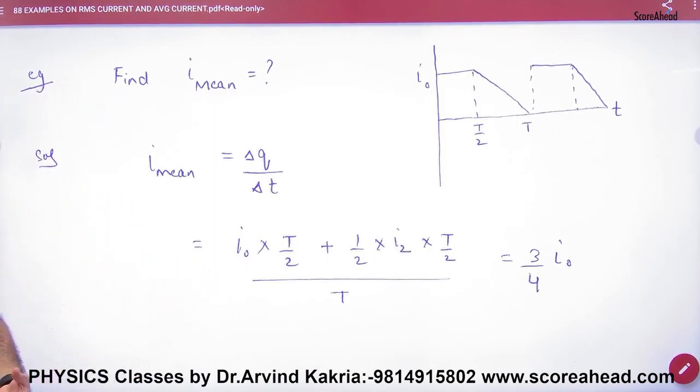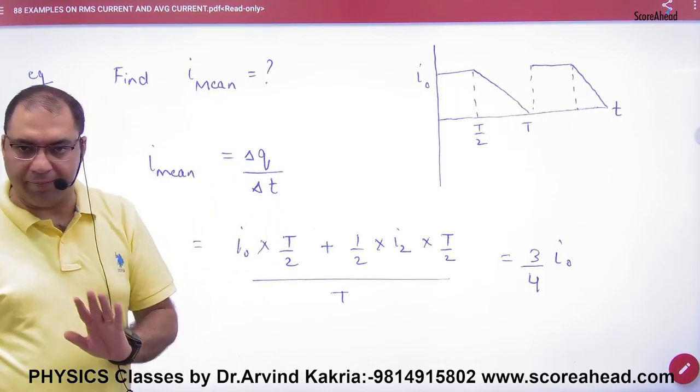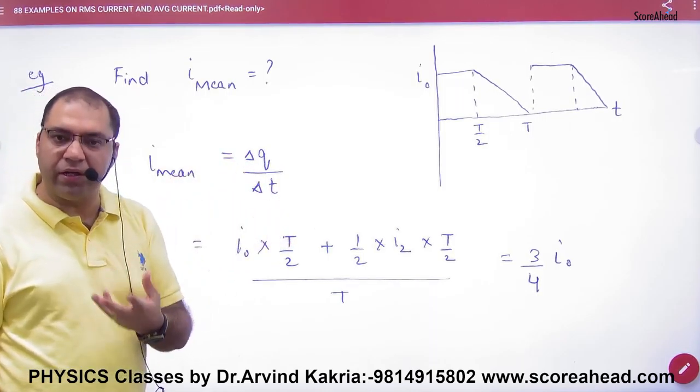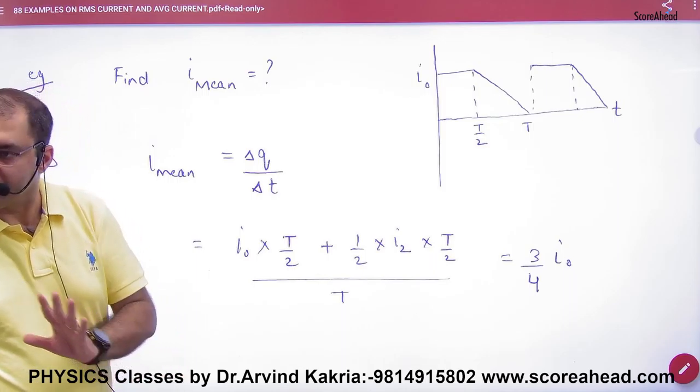Mean current. The basic formula was what? Total charge upon total time. Basically what was it? Mean current, total charge divided by total time.